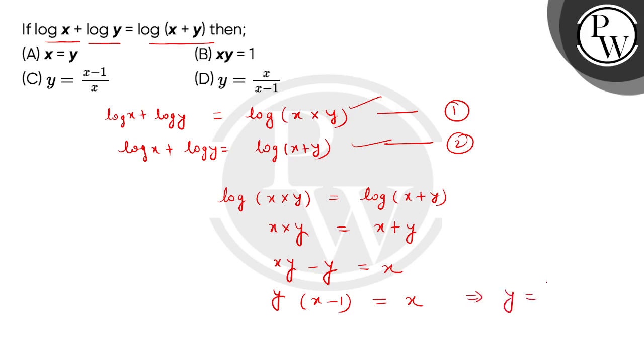So we get y equals x divided by x minus 1. The correct answer is option D. Thank you.